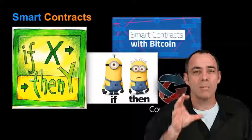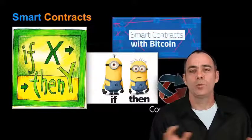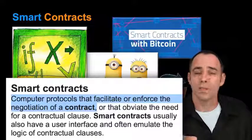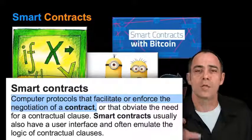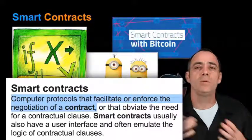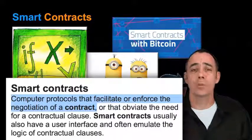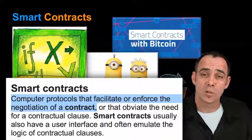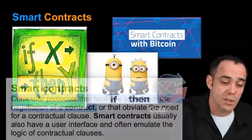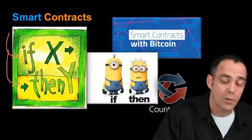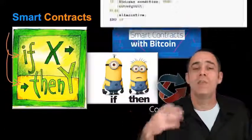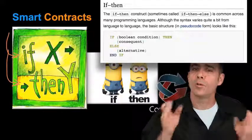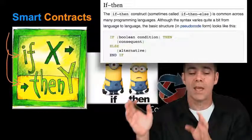Now to understand most of these killer apps, it's absolutely essential that you understand this idea of smart contracts. And it's not complex at all. The simplest smart contract really is just an if and a then. So if I go to school, then I will see my teacher — just a simple statement where you have an if and then something happens.